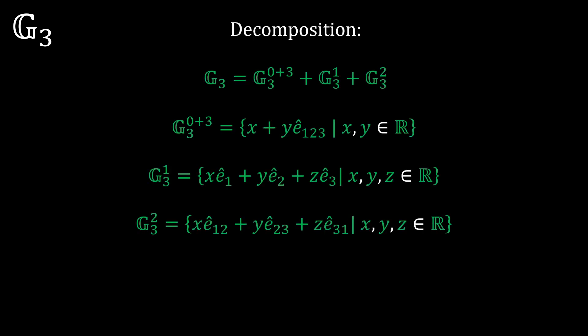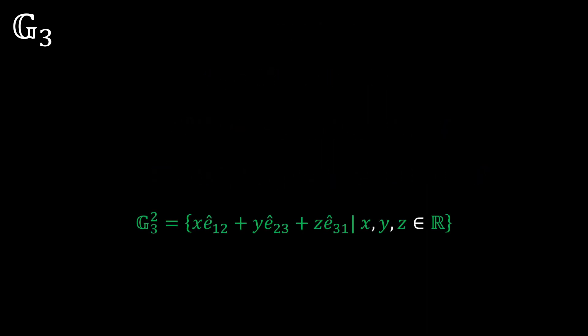But just like with the g2 algebra, the g3 algebra can be decomposed. Let's split it into three parts. The 0 plus 3 subalgebra, which is isomorphic to the complex algebra because the unit trivector squares to negative 1. The vector subalgebra, which is isomorphic to real number space. And the bivector subalgebra, which is, well, what is it isomorphic to? Let's investigate a bit.